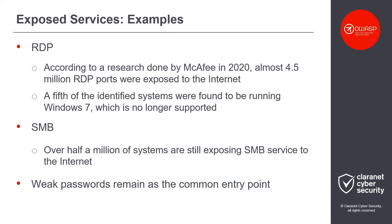Unnecessary features and services being enabled is probably the most common example of security misconfigurations. Attackers constantly scan the internet for open ports looking for exposed services such as RDP and SMB, which in most cases should not be exposed to the public. According to research done by McAfee in 2020, almost 4.5 million RDP ports were found to be exposed in March of that year. Just having the service exposed is already a risk, but on top of that, a fifth of the identified systems were found to be running Windows 7, which is no longer supported by Microsoft.